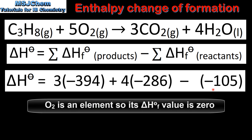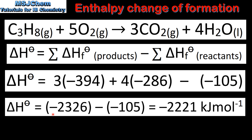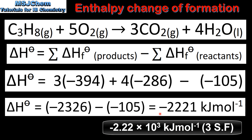Next we have the standard enthalpy change of formation value for propane, which is negative 105 kJ/mol. So here we have the sum of the enthalpy change of formation values of the products minus the sum of the enthalpy change of formation values of the reactants. When we do this calculation we get a standard enthalpy change of reaction of negative 2221 kJ/mol.